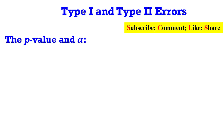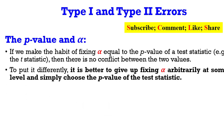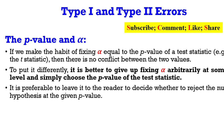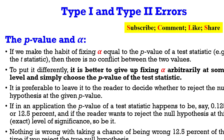Let's take a look at the p-value and its relationship with alpha, the level of significance. If we make the habit of fixing alpha to be equal to the p-value of any given test statistic, then there is no conflict between the two values. It is better to give up fixing alpha arbitrarily at some level and simply choose the p-value for the test statistic. It is also preferable to leave it to the reader to decide whether to reject the null hypothesis at that given p-value. If in an application the p-value of a test statistic happens to be, say, 0.125, which is 12.5%, and if your reader decides to reject the null hypothesis at that level of significance, so be it — there is nothing wrong with taking a chance of being wrong 12.5% of the time.